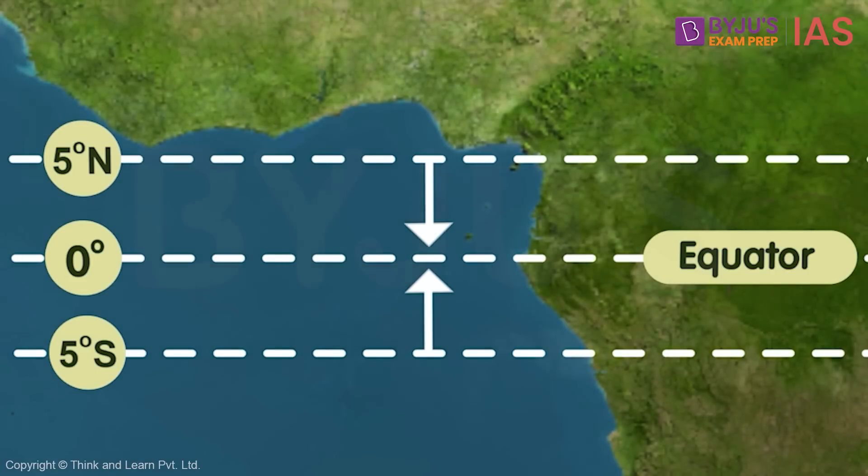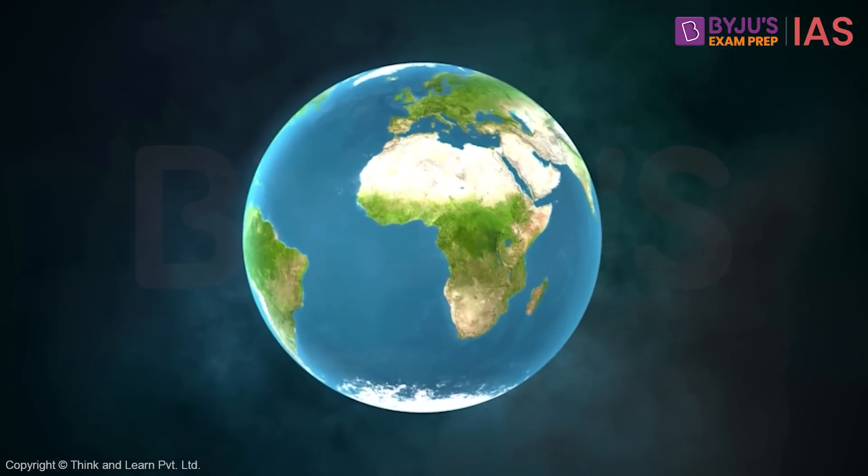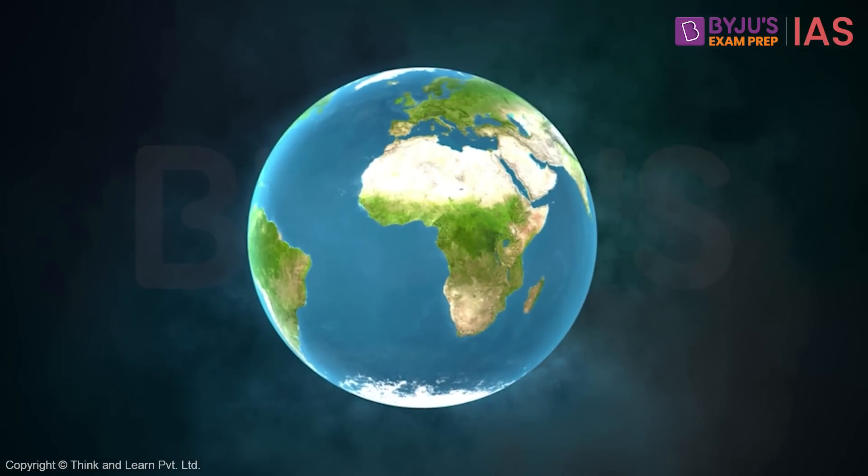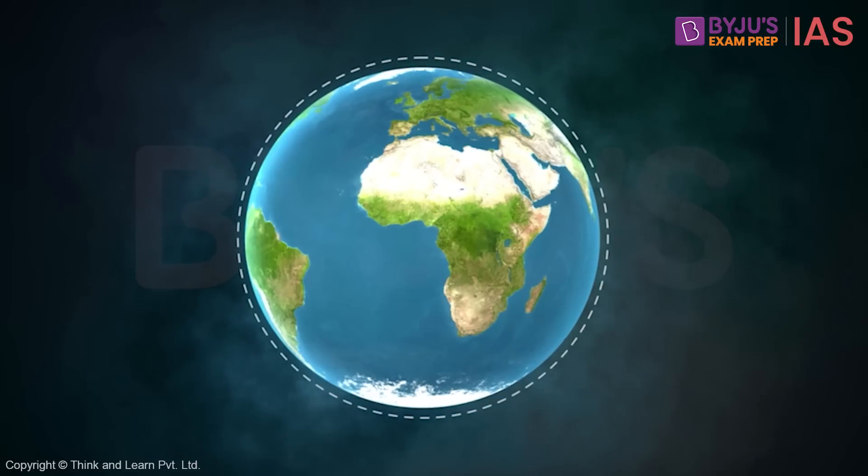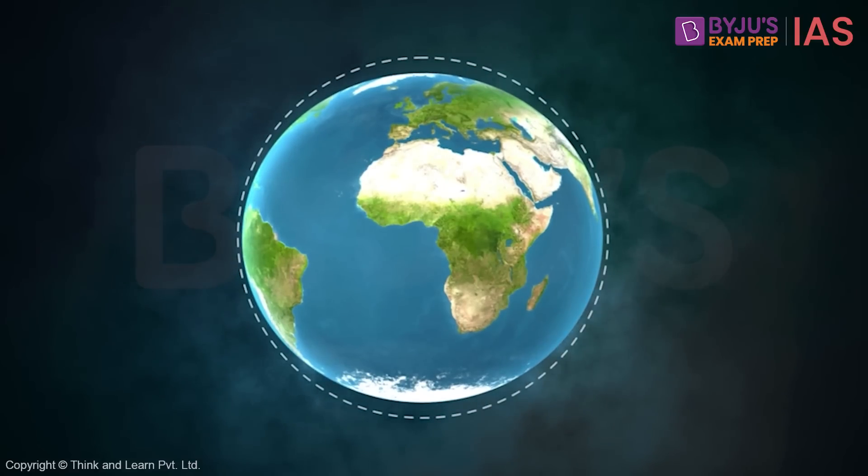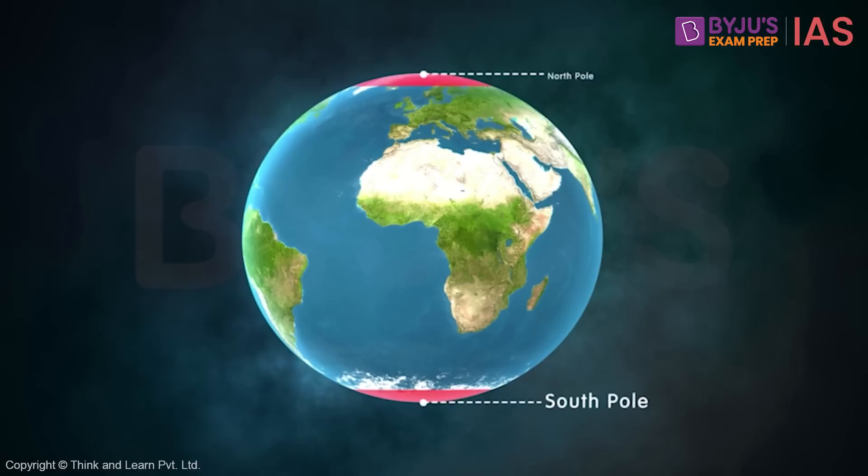Now, let's see what happens in the polar regions. We know that Earth is not a perfect sphere. Rather, it is slightly bulged at the equator and flattened at the poles. Because of this flatness, poles experience maximum Coriolis force.